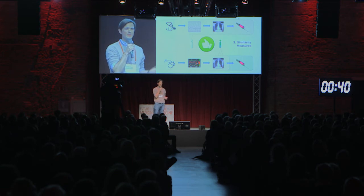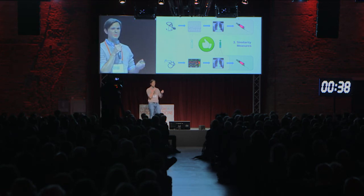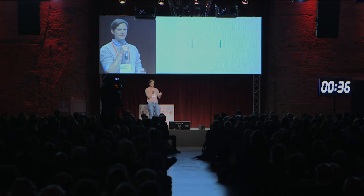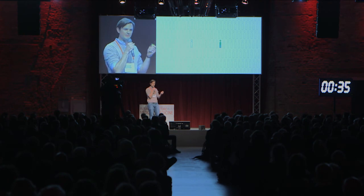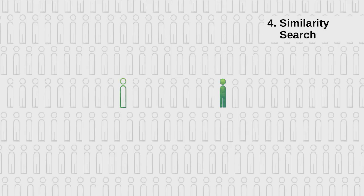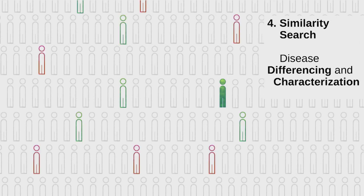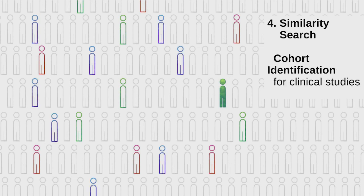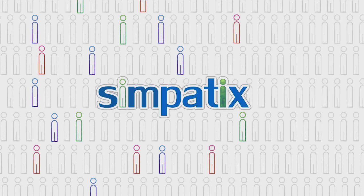Once we have such similarity measures, we want to apply them at scale and enable similarity search over whole populations of patients to, in the end, allow for use cases such as clinical decision support, disease differencing and characterization, and cohort identification for clinical studies. And that's exactly what we're doing in the Simpatex project.